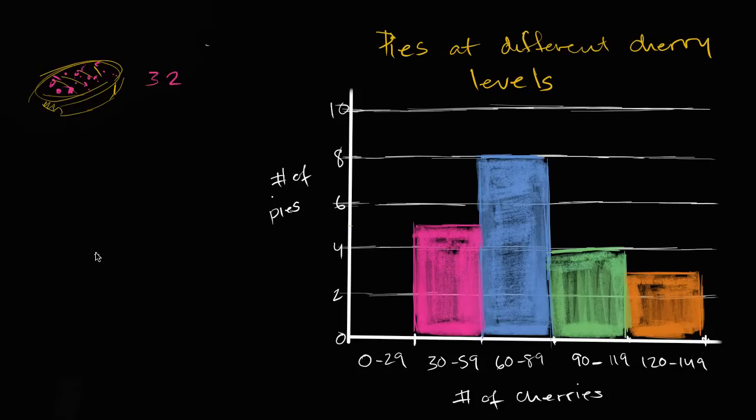And you do that for every pie. And then you created buckets because you don't want to create just a graph of how many have exactly 32. You just want to get a general sense of things. So you create buckets of 30.